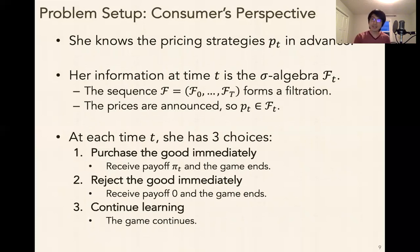So at each time T, she has three possible choices. One, she can purchase the good immediately. She'll receive a payoff pi of T, and then the game will end. No future interactions. Single indivisible good purchased. The second action she can take is she can reject the good immediately. She'll receive a payoff of zero, and the game will end also. And the third option she can take is that she'll continue learning. And the game is just going to keep going. So those are her three actions: purchase, reject, continue.